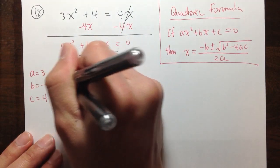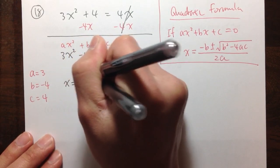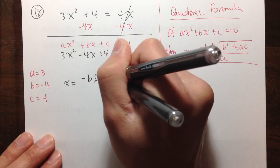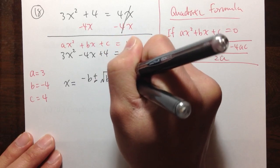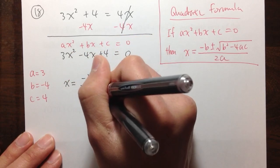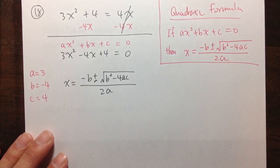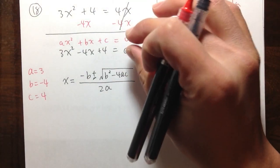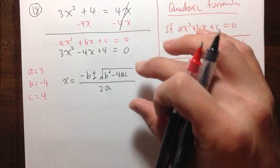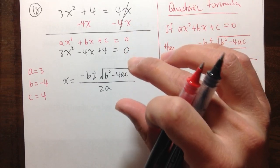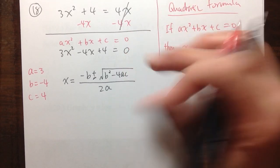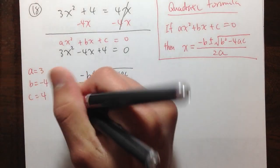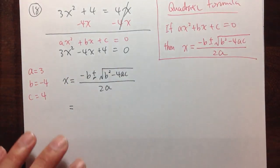So we are going to apply the quadratic formula and do the calculation. x equals negative b plus or minus square root of b squared minus 4ac, everything over 2a. Every time I solve a quadratic equation, I write down the quadratic formula first, and then I plug in the numbers — this is how you set up the calculation.